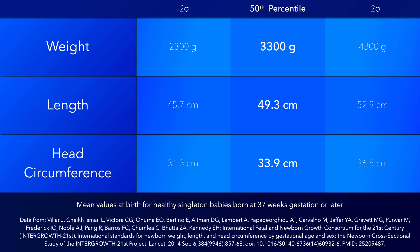For example, the 50th percentile of birth weight is different between boys and girls and between babies born at 37 and 40 weeks gestation. The values presented here are simply their overall mean. For those interested, the study referenced below also provides smooth centiles for birth weight, length, and head circumference according to sex and gestational age.